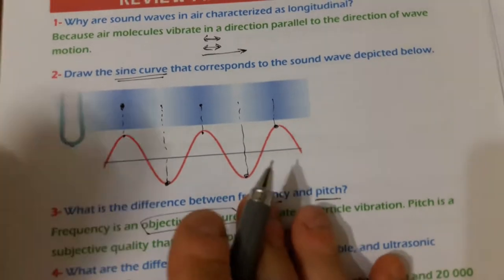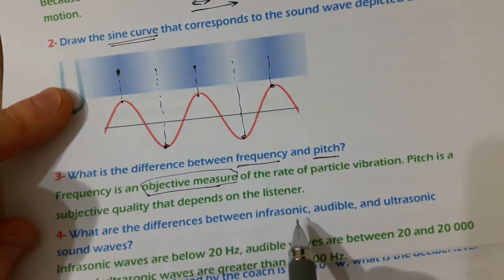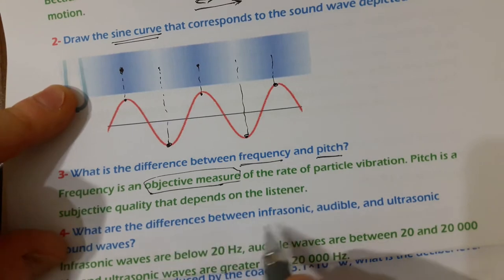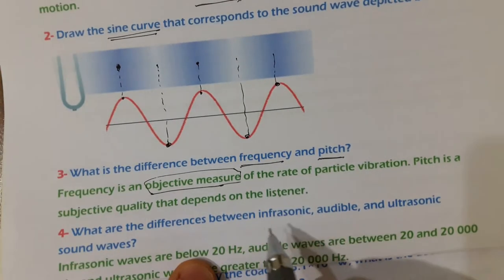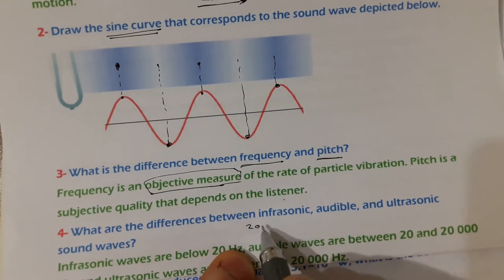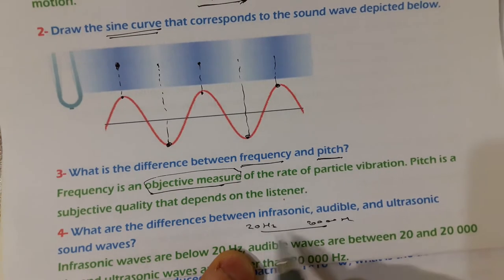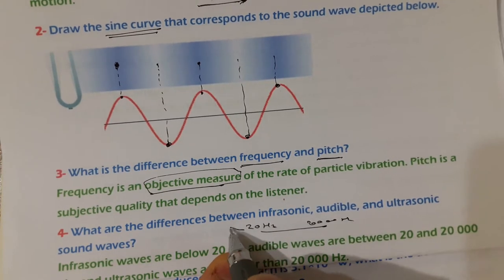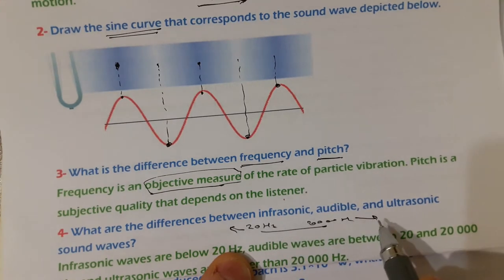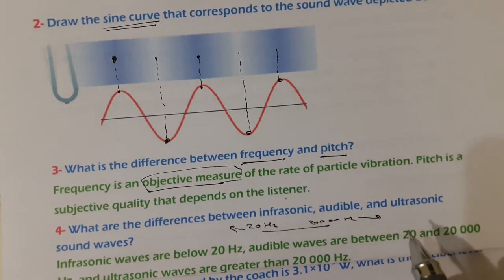Question number four: what are the differences between infrasonic, audible, and ultrasonic sound waves? If the sound wave's frequency is between 20 Hz and 20,000 Hz, it is the audible region. If the frequency is smaller than 20 Hz, it is infrasonic. If the frequency is greater than 20,000 Hz, it is ultrasonic sound waves.